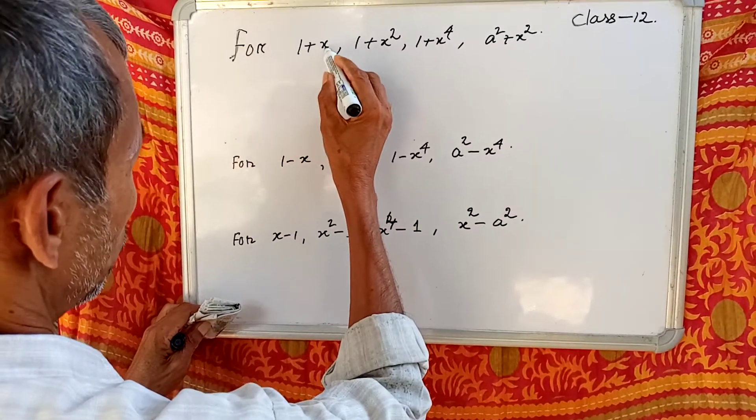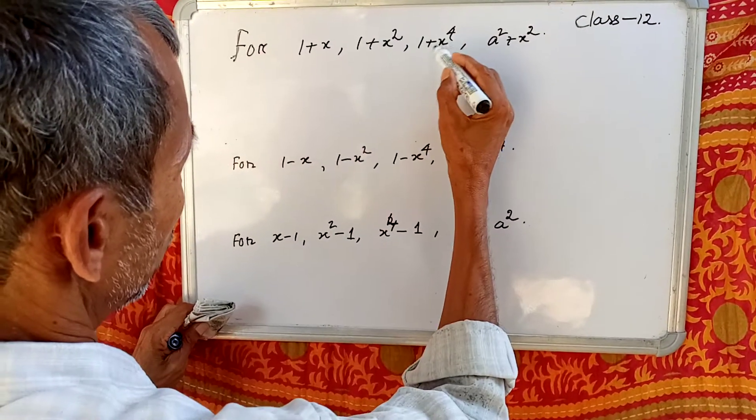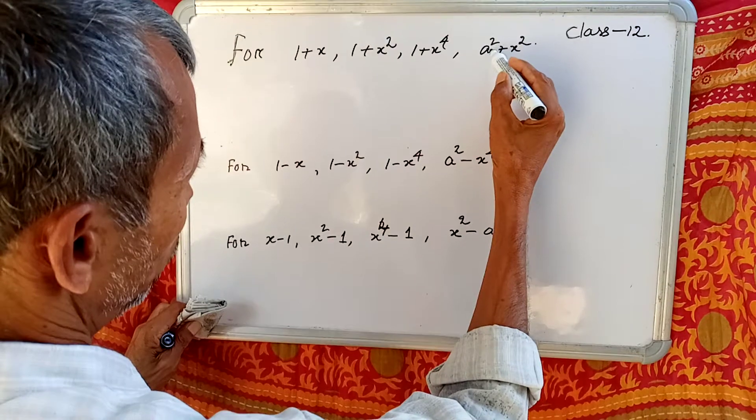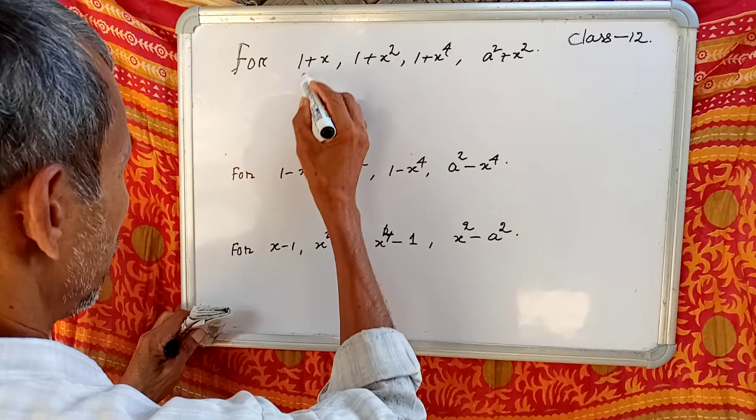For 1+x, 1+x², 1+x to the power 4, square plus x².